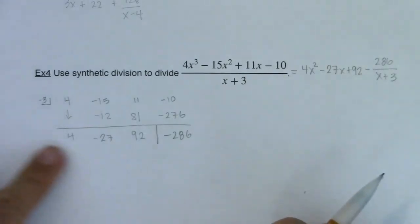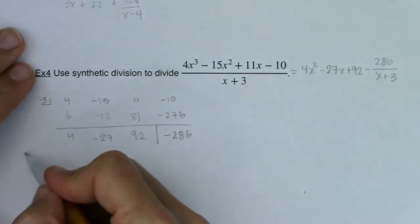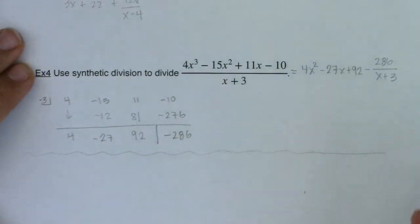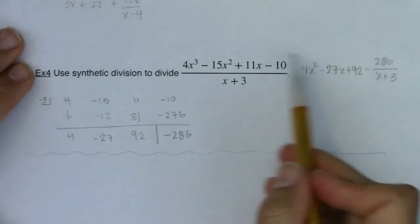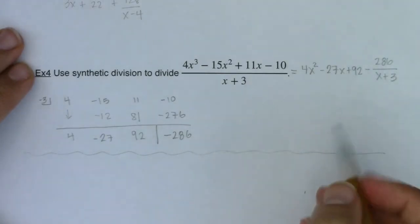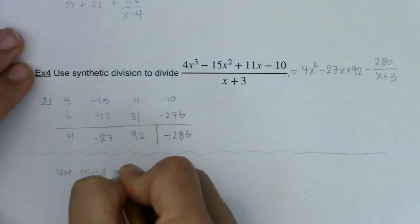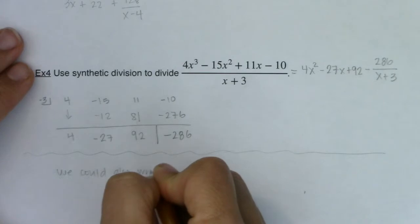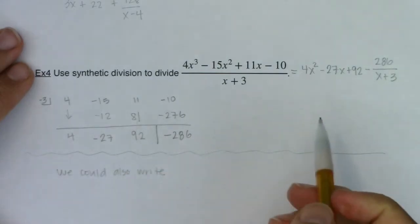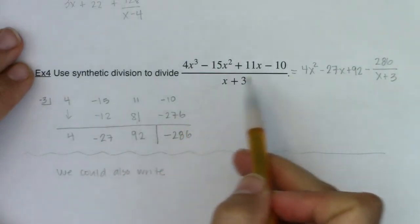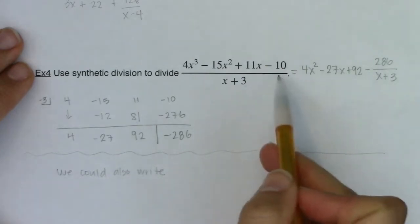Alright, and just so you know, let me go ahead and put a little separation bar. If you wanted to, I could rewrite this. And let me show you what I could say here. We could also write, I could multiply everything in here by x plus 3, right?